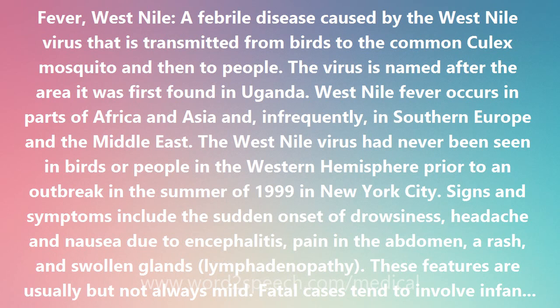Signs and symptoms include the sudden onset of drowsiness, headache and nausea due to encephalitis, pain in the abdomen, a rash and swollen glands — lymphadenopathy. These features are usually but not always mild. Fatal cases tend to involve infants and small children under age 5, the aged, and people with an impaired immune system.